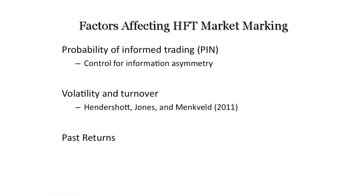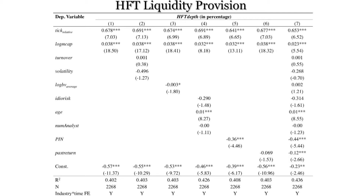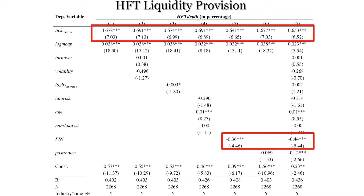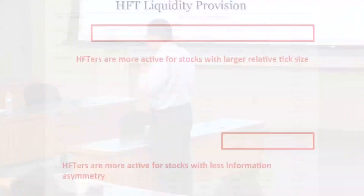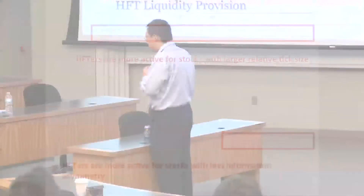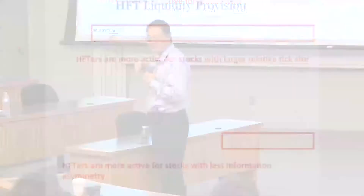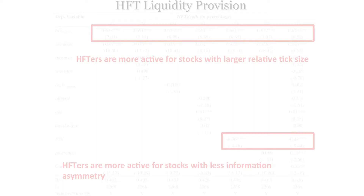Here's the regression result. There are only two main takeaways. First, high-frequency traders are more active for stocks with large relative tick size — low-price stocks have lots of HFT activity, high-price stocks have much less. Second, whether HFT provides more liquidity for stocks with information asymmetry — our results show the opposite. Stocks with higher information asymmetry have less high-frequency trading. Basically, HFT provides liquidity for stocks with large relative tick size and lower information asymmetry.